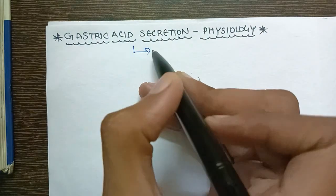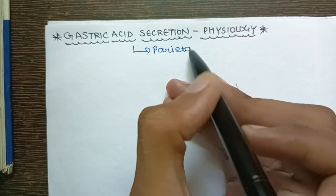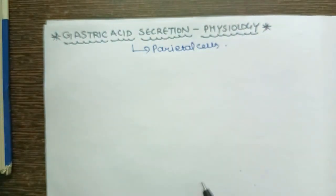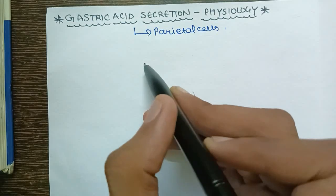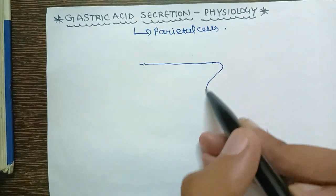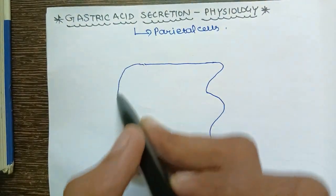We all know that gastric acid secretion occurs in parietal cells of stomach. So we have a parietal cell. I am going to make a parietal cell. This is the lumen, and this is a parietal cell.